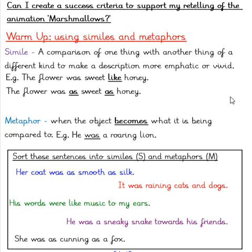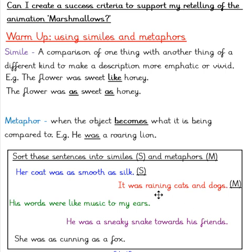Now it's time to go through our answers. Let's take a look at our first sentence: 'Her coat was as smooth as silk.' Here, the coat is being described to be smooth like silk. Therefore, this is a simile. The word 'as' was a clue here. Next, we have the sentence: 'It was raining cats and dogs.' This is a metaphor. Rain, as the object in this sentence, has become cats and dogs.